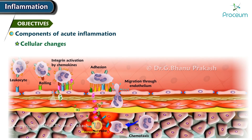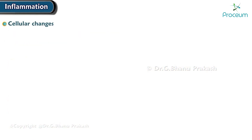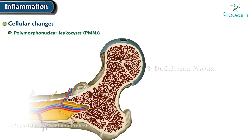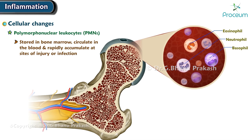Now, let's move on to cellular changes. Polymorphonuclear leukocytes, or PMNs, are stored in bone marrow, circulate in the blood, and rapidly accumulate at sites of injury or infection. They predominate in acute inflammation.